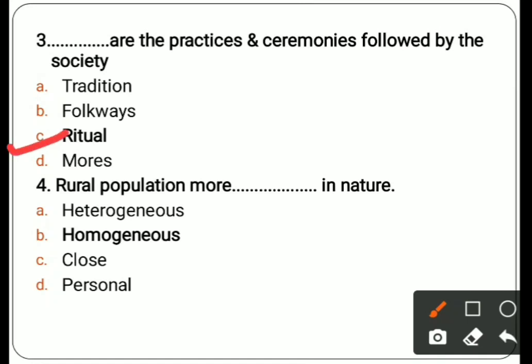Next question: rural population is more dash dash in nature. Options are heterogeneous, homogeneous, close, personal. The correct answer is homogeneous — rural population is more homogeneous in nature.